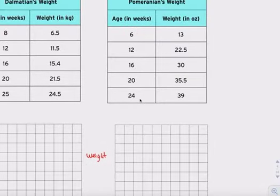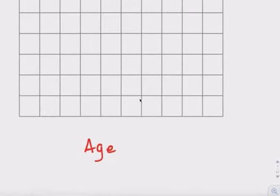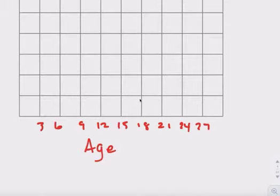Okay, so here, let's see. Our largest number is 24, right? How many boxes do we have? We can fit 3. So 3, 6, 9, 12, 15, 18, 21, 24, 27, and 30, right?